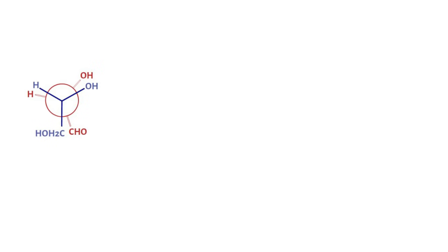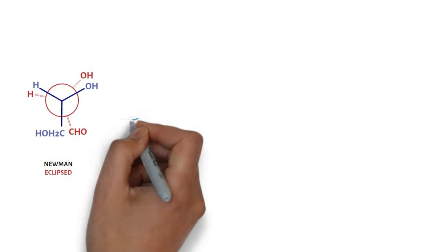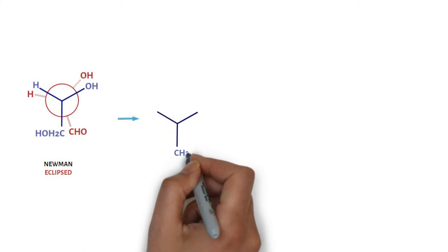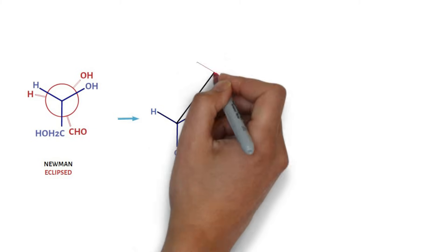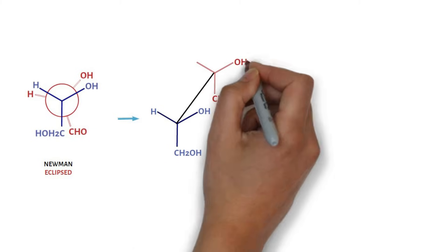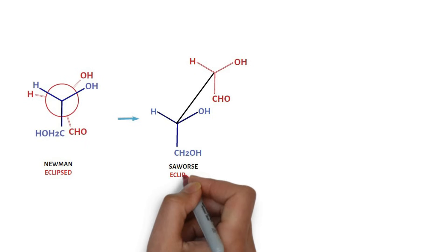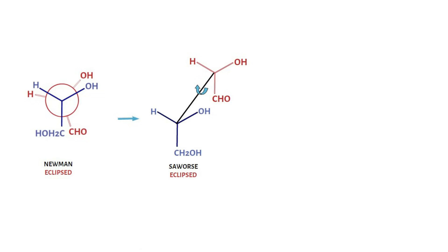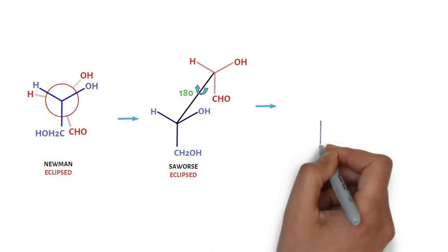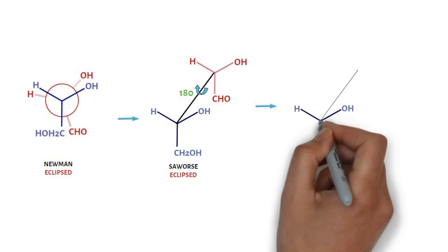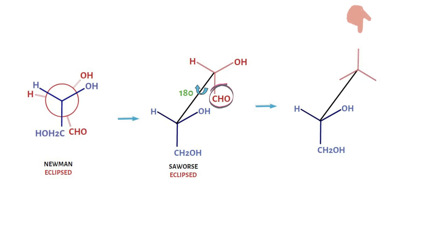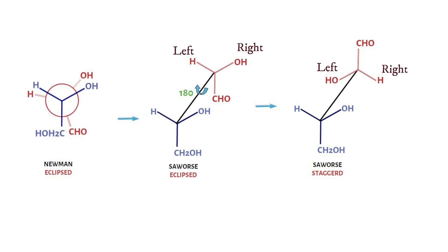Similarly, you can convert this eclipsed Newman projection into an eclipsed sawhorse projection by replacing the circle with a line or bond. Then attach groups to the front and back carbon without any change in position. This gives the eclipsed sawhorse projection. This eclipsed sawhorse can be changed to staggered by keeping the front carbon stationary and rotating the back carbon by 180 degrees, so that the aldehyde group now points up, hydroxyl moves to the left side, and hydrogen to the right side — opposite to the positions they occupy in the eclipsed sawhorse projection.